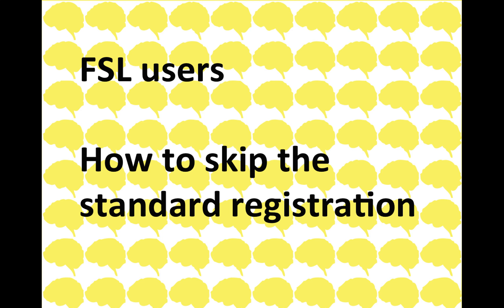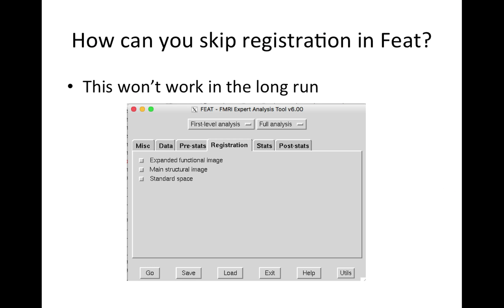They want to use those image registration algorithms as opposed to FSL's FLIRT and FNIRT combination. If you've ever tried to do this in FSL — skipping FSL's registration — you typically run into problems. Your first try might be to simply turn off the registration in the GUI when running your first level analysis, and this will run the first level analysis, but the problem occurs at the higher level analysis — it will stop.